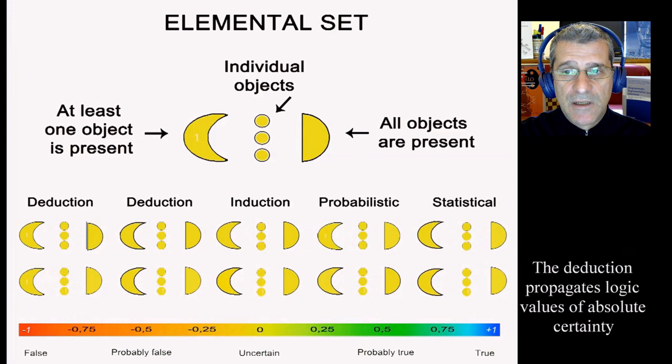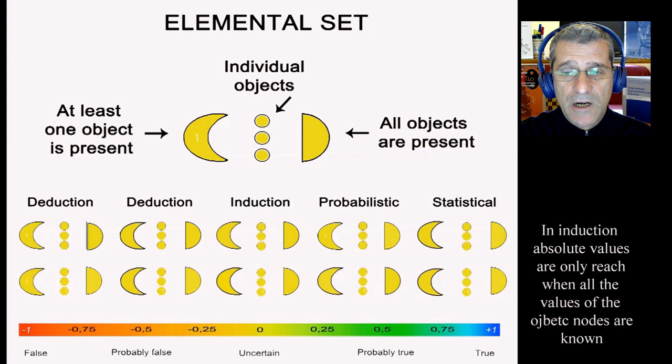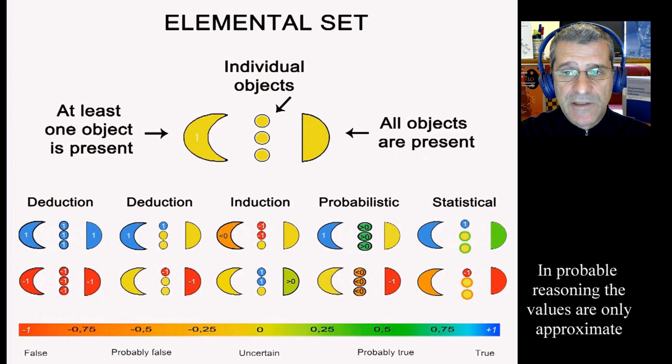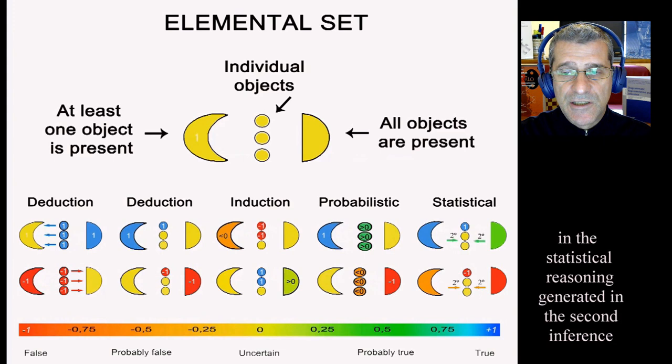In probability reasoning, values are only approximate. Finally, in the statistical reasoning generated in the second inference, the assumed values of the objects are only supported by direct evidence of other really known values.